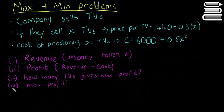Okay, so the questions 1, 2, 3, and 4. The first question is the revenue. You have to calculate the revenue, which is the money you get in. Calculate how much money is taken in by the company when they sell their TVs. Number 2 is calculate the profit. So that's the revenue minus the cost because the money you get in minus the money you spend. That's going to be the amount of money you're going to make. And then how many TVs gives the max profit. So how many TVs do you have to sell to get the maximum profit? And then what is that maximum profit?